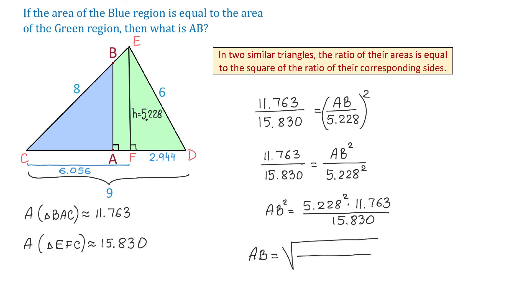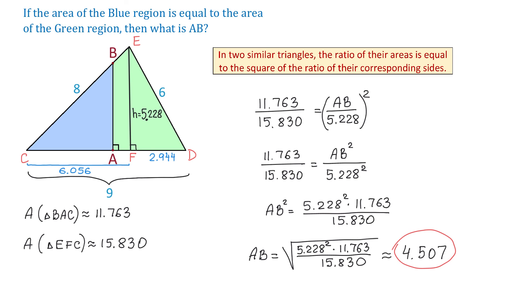To find AB, we take the square root of the right side. Under the square root we have 5.228 squared times 11.763 divided by 15.830. Then AB will be approximately 4.507, and the problem is completed.